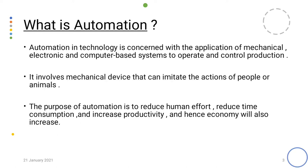So what is automation? Basically automation is something that brings an ease in work, increases the efficiency of work and hence economy is also increased. Automation in technology is concerned with the application of mechanical, electronic and computer based systems to operate and control production. It involves mechanical devices that can imitate the actions of people or animals — just like we can take the example of JCB in construction field.